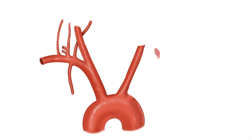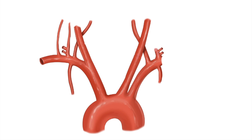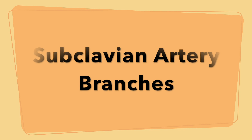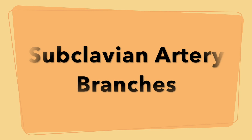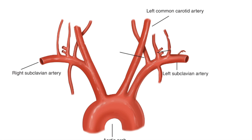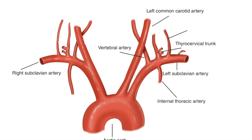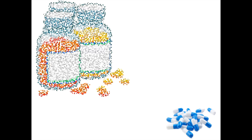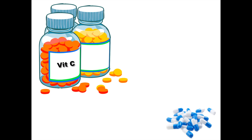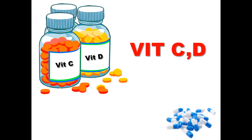Hey guys, welcome to my channel. Today I have two interesting mnemonics for subclavian artery branches. The main branches of the subclavian artery are: vertebral artery, internal thoracic artery, thyrocervical trunk, costocervical artery, and dorsal scapular artery. The first mnemonic for these main branches is 'VITAMIN CD'.